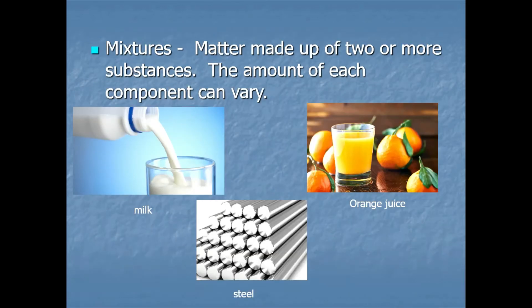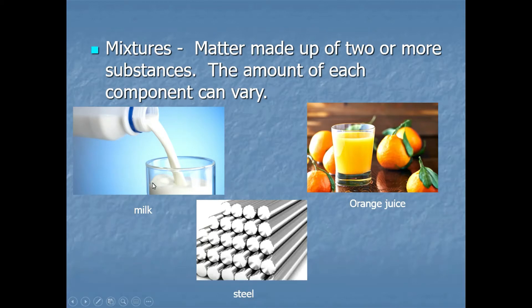Mixtures are matter made up of two or more substances — whether elements or compounds. What makes mixtures different from pure substances is that when you mix these things, they don't chemically bond together. For example, milk contains many compounds — lactose, water, protein, and fat — and you can vary the fat content. There's non-fat, 1%, 2%, and whole milk. If the amounts can vary, it's a mixture.